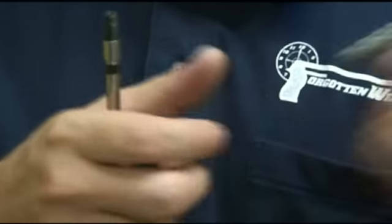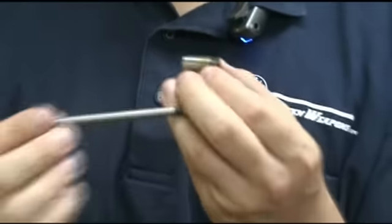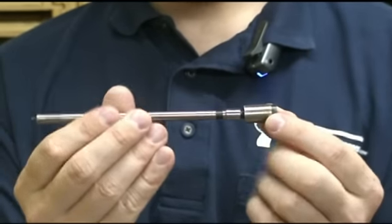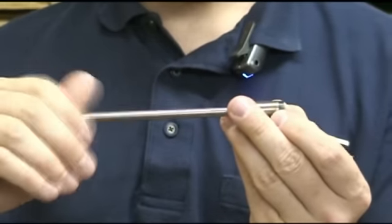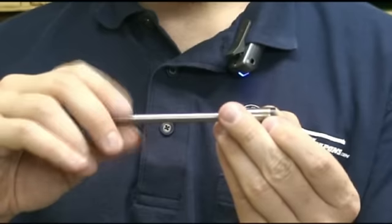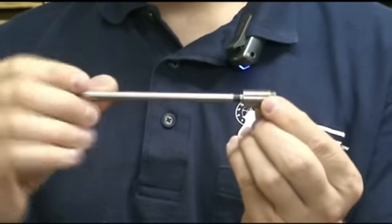And then the center piston threads into it. So you put this in through the ejection port, then you run this in through the barrel. Thread it down. Like so.